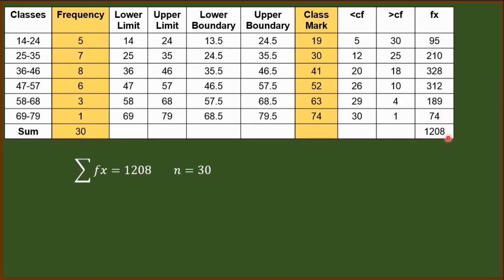the sum of the added column. And n, of course, is 30, the sum of the frequency. We will just substitute these values to our formula for the mean of group data.